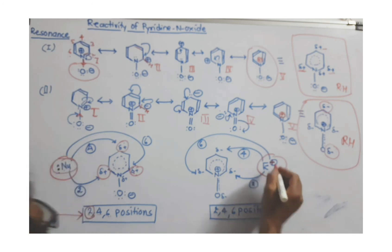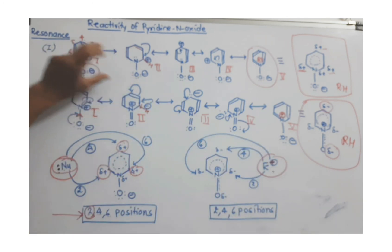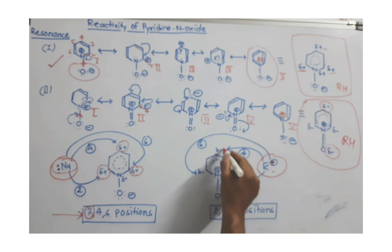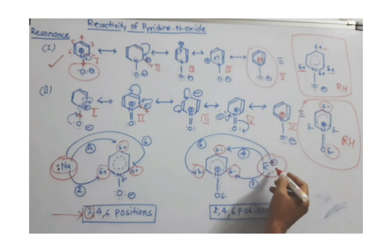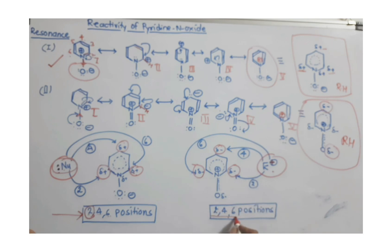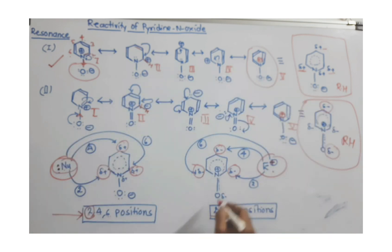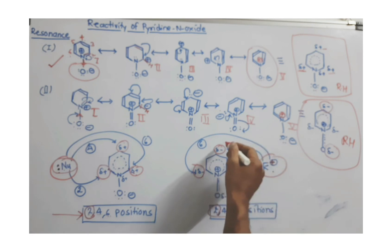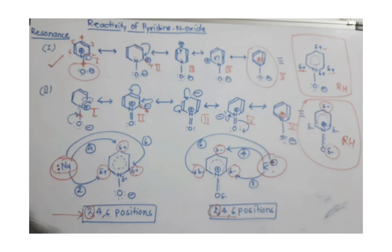For electrophilic substitution, we consider the other role of oxygen — the donating effect. Partial negative charges are developed at carbons 2, 4, and 6, so the electron-deficient electrophile will also attack at positions 2, 4, or 6. Electrophilic substitution therefore takes place mainly at carbon number 2. If those positions are blocked or unavailable, the reaction moves to the fourth position, depending on reagent concentration and other factors. This is all about the reactivity of pyridine N-oxide.